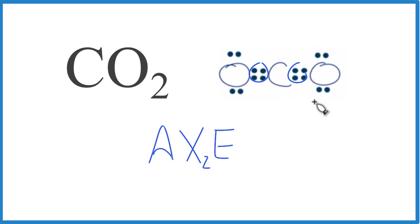So zero lone pairs. Let's just get rid of the E here. And if you look up AX2 on a table, you'll find that CO2 has a linear molecular geometry, just like we found before.